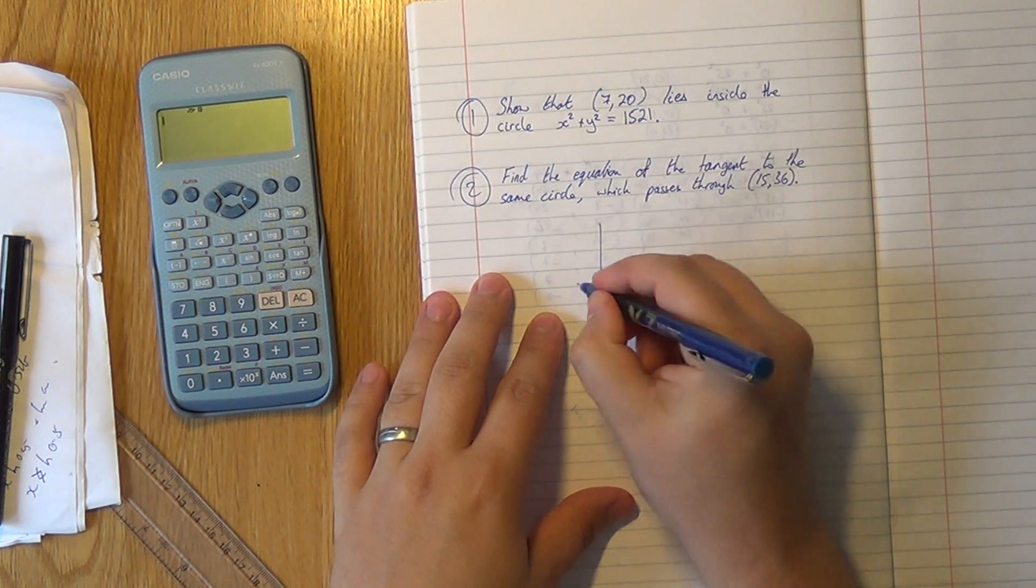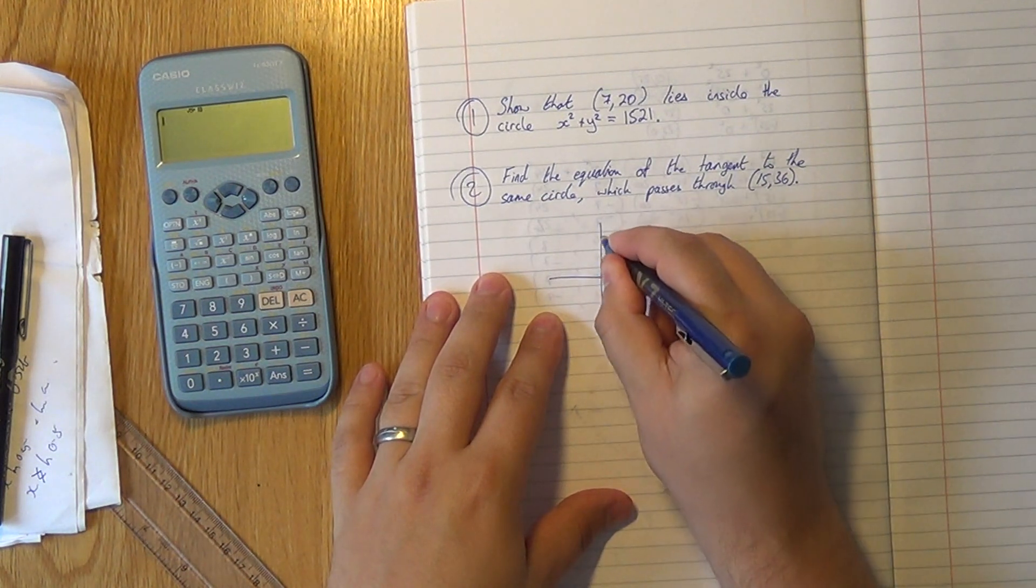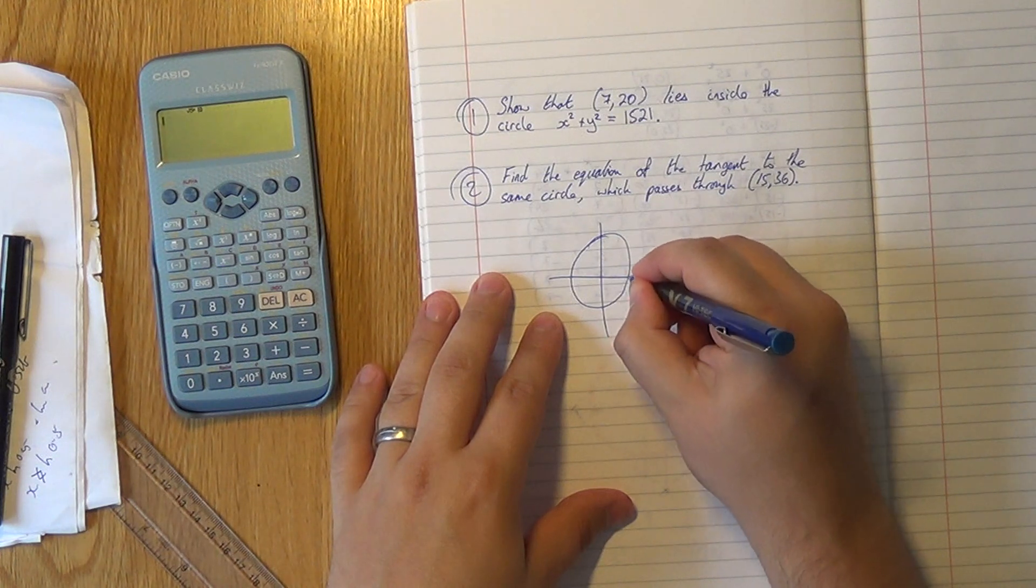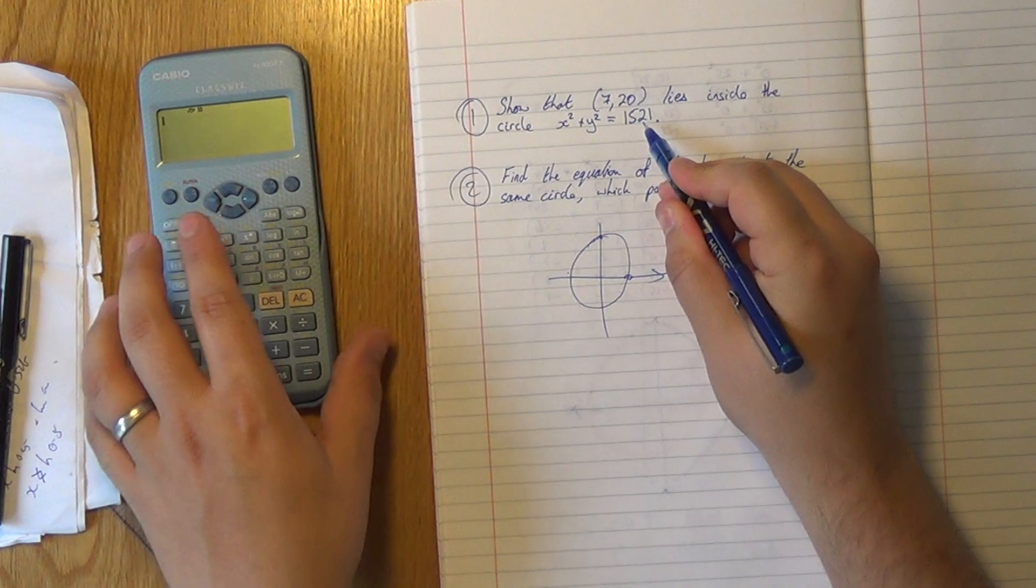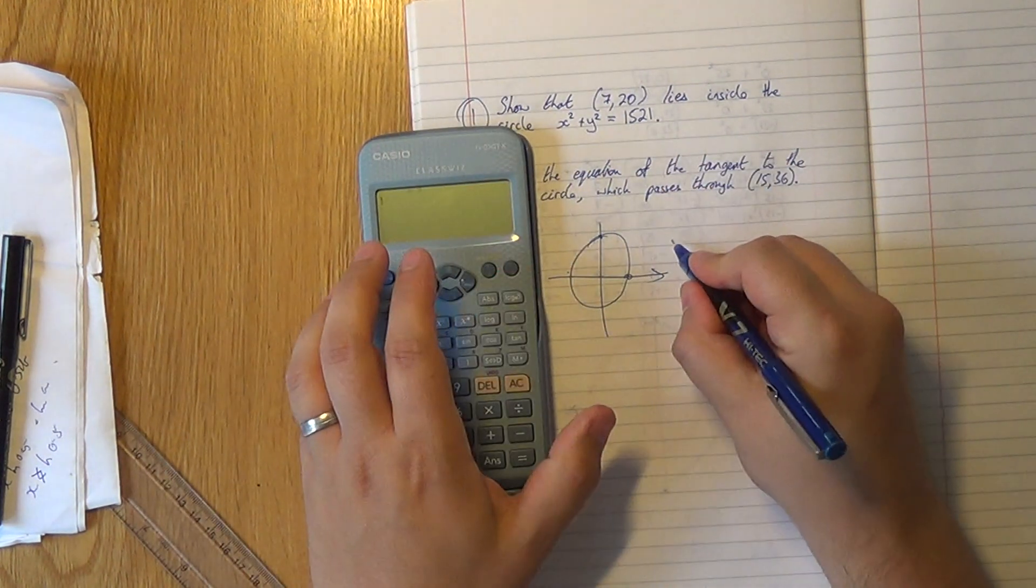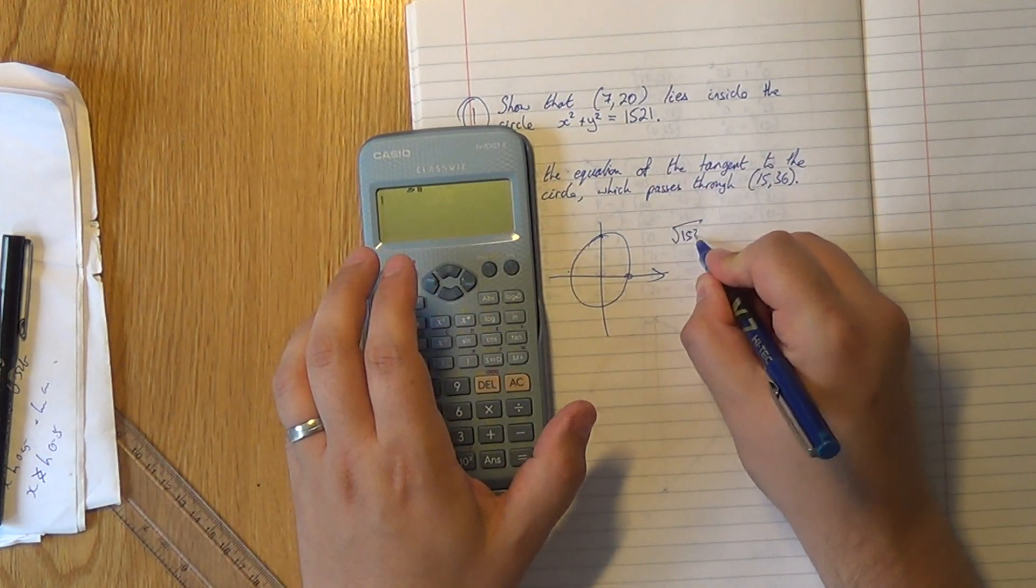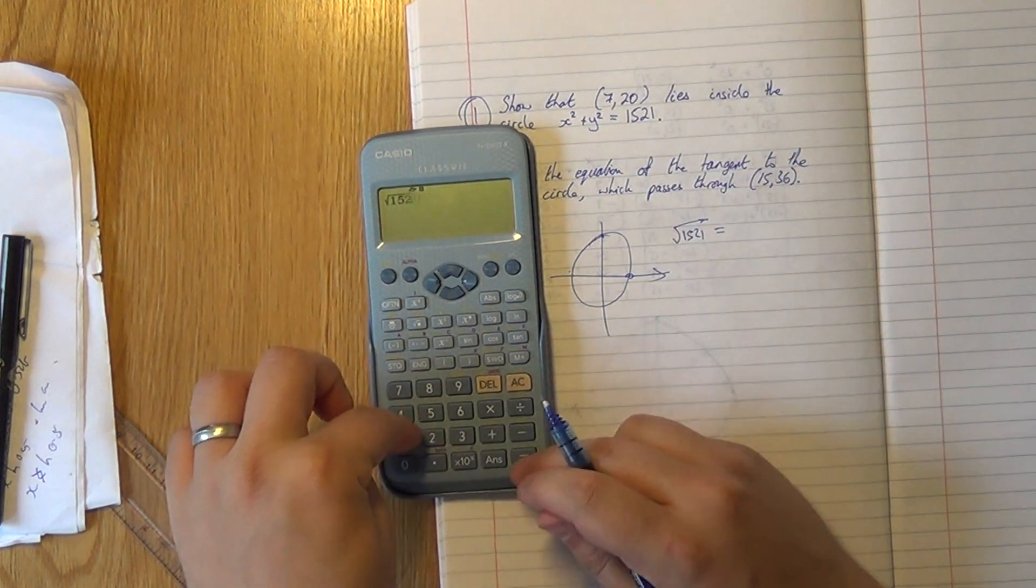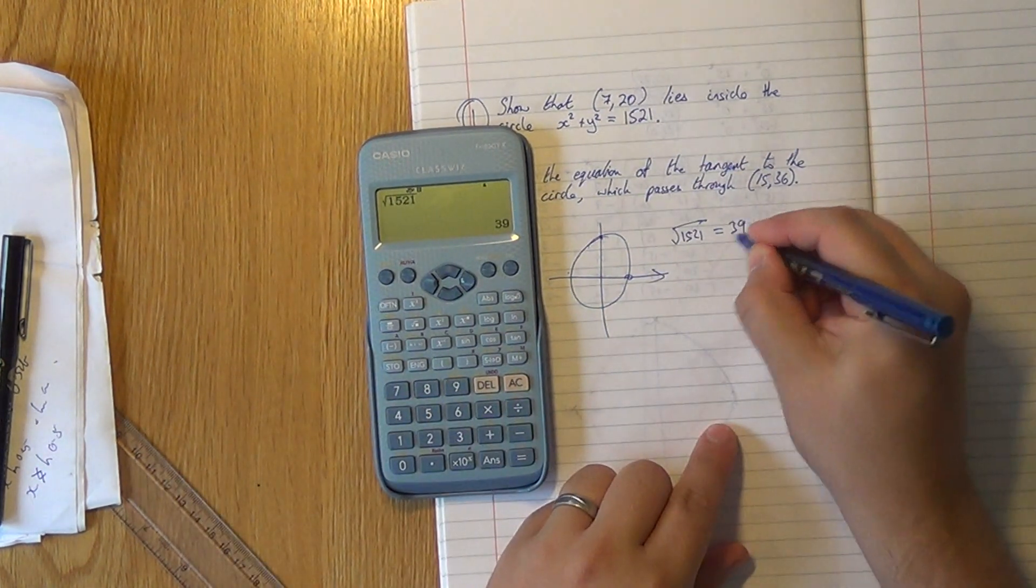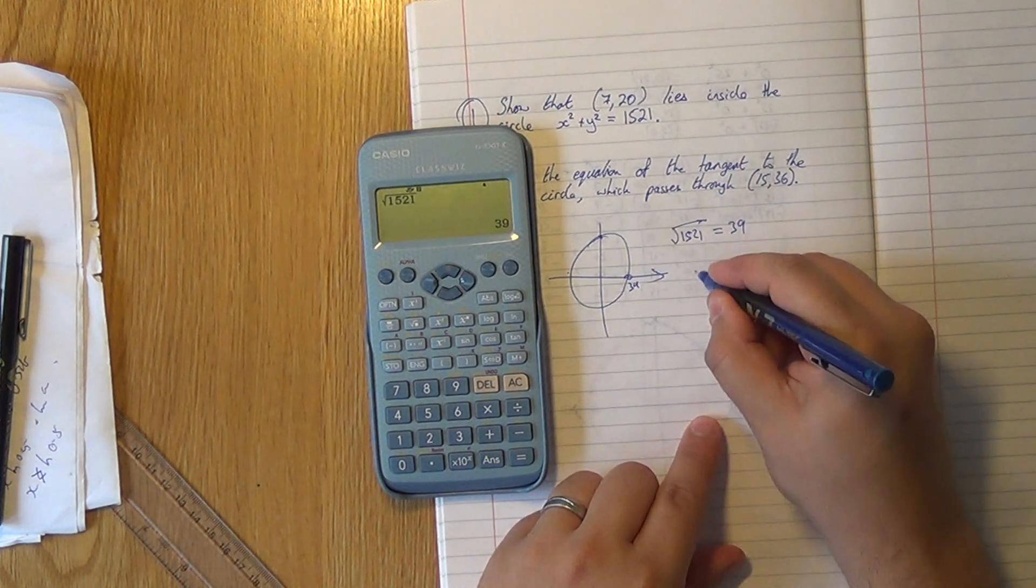So we'll get ourselves a quick sketch of a circle. The key thing we need to know is what this radius is. How far out are these intercepts? It's linked to this value here. Hopefully it'll be relatively easy because I wasn't trying to set a trap. So the square root of that should be 39. It is. So this is a radius of 39, this circle.